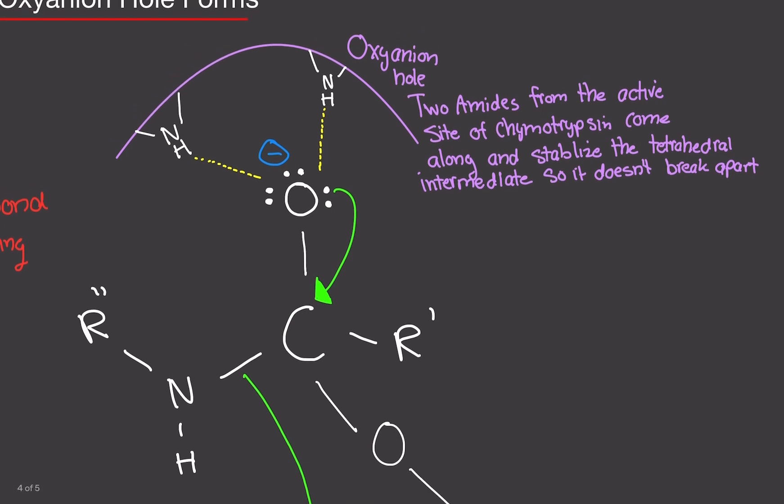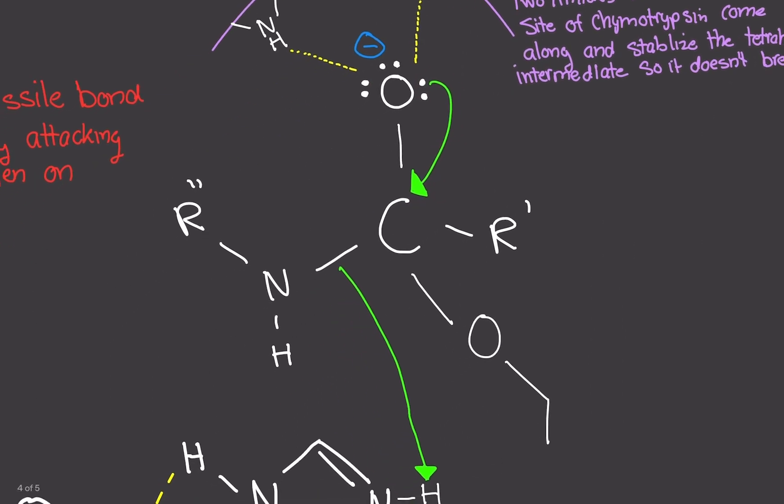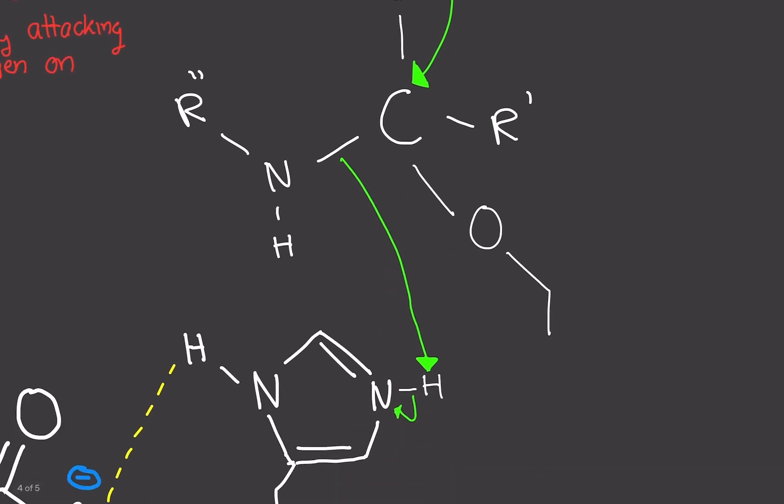So now that pi bond broke, that double bond broke. Now the tetrahedral intermediate is very unstable. So what's going to happen is these electrons are going to go back to the carbon, and the carbon cannot hold those electrons. So what's going to happen is it's going to cause this carbon-nitrogen bond here to break. That's the scissile bond we just talked about. And the scissile bond is going to go over to the hydrogen and attack that. And since hydrogen cannot have more than two bonds, the electrons are going to spread to the nitrogen. That's what's happening here.